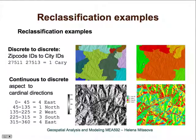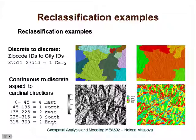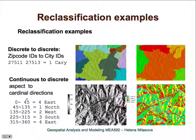We can also reclassify continuous data. A common example is reclassifying aspect — the orientation of topography, which ranges from 0 to 360 degrees — into four cardinal directions. This is useful for applications where we want a simple map showing where north, west, south, and east are. The reclassification is based on intervals rather than individual values.